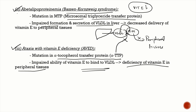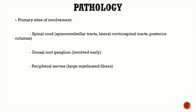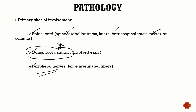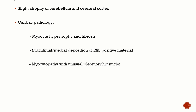In neuropathology, the primary sites of involvement are the spinal cord, dorsal root ganglia, and peripheral nerves. In the spinal cord, the spinocerebellar tracts, lateral corticospinal tracts, and posterior columns are affected. One of the earliest structures involved is the dorsal root ganglion. There is a large-fiber peripheral neuropathy, as large myelinated fibers are preferentially affected. Cerebellar and cerebral cortex involvement is minimal — only slight atrophy.